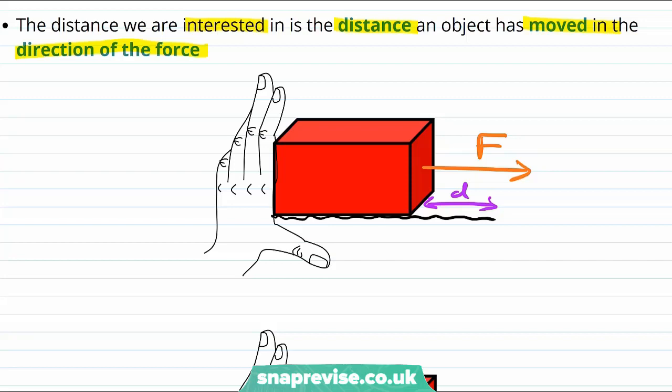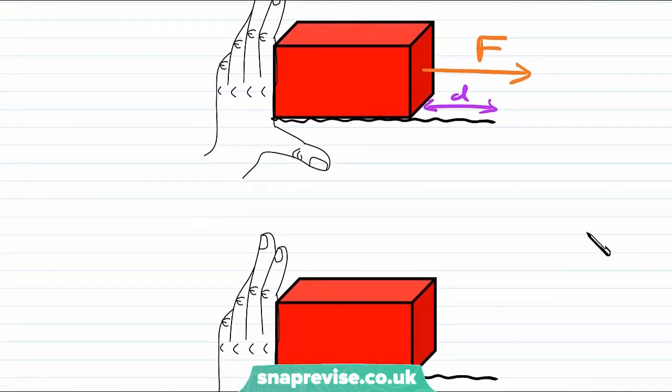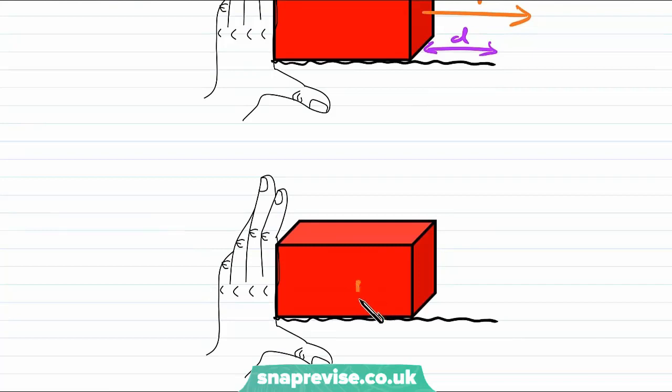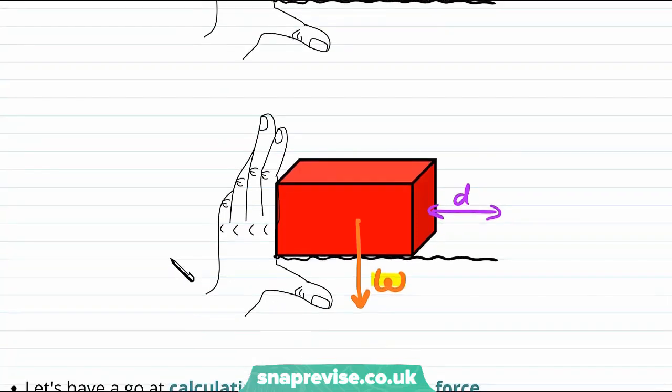For example, there are other forces on this block. For example, there is the force of gravity that pulls the block downwards. In other words, the weight of the block. But remember in our example, the block is moving along the table and it's not moving up or down. Since the block doesn't move any distance in the direction of the force of gravity or the weight, the force of gravity or weight does no work.